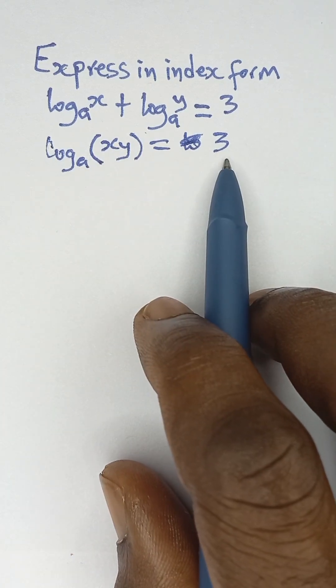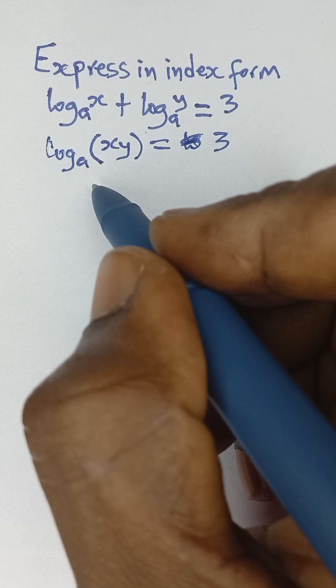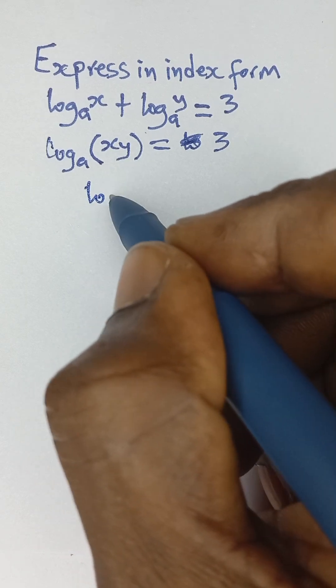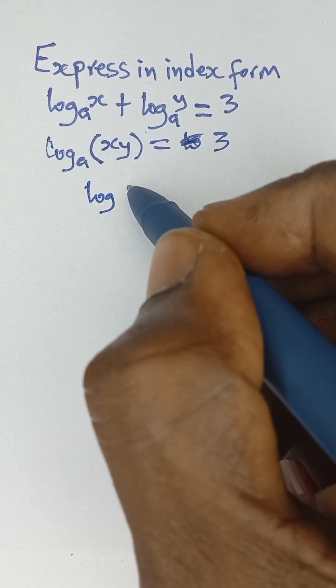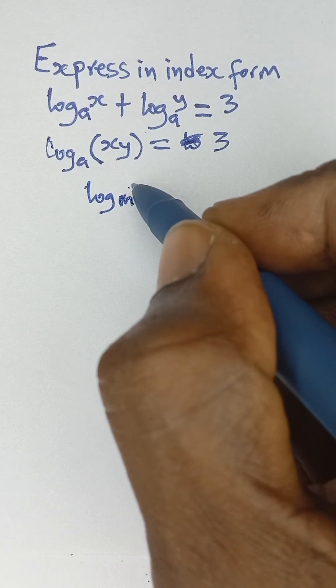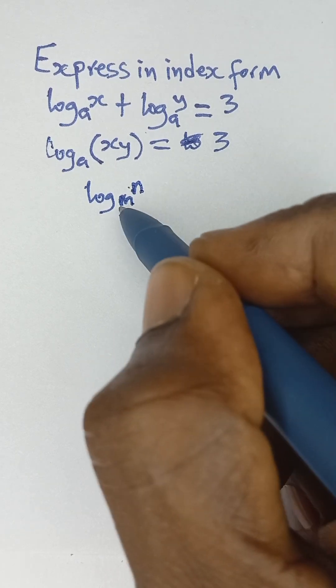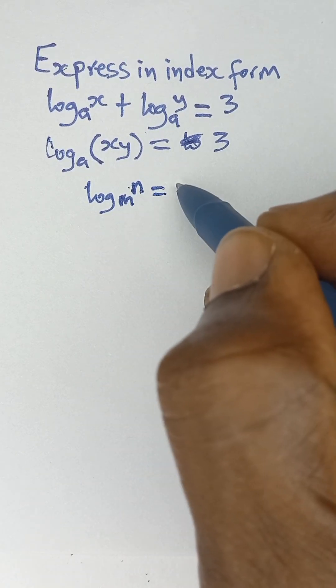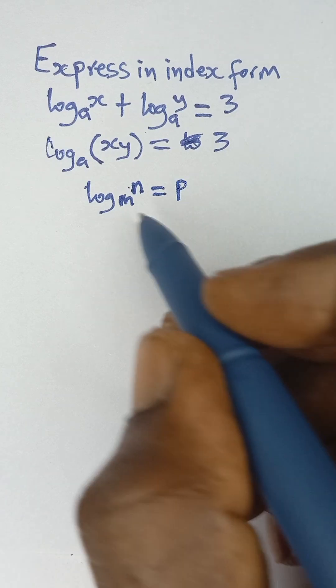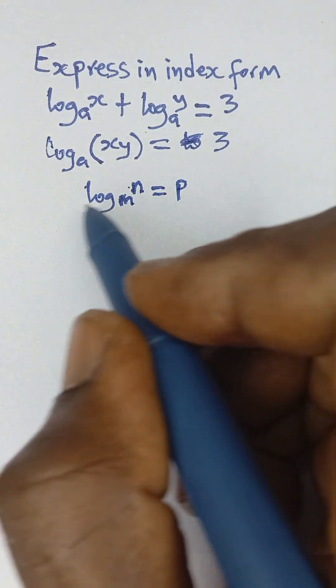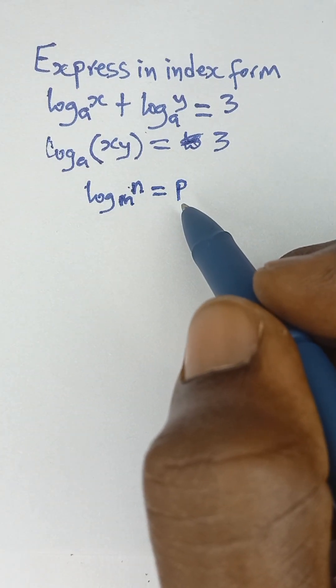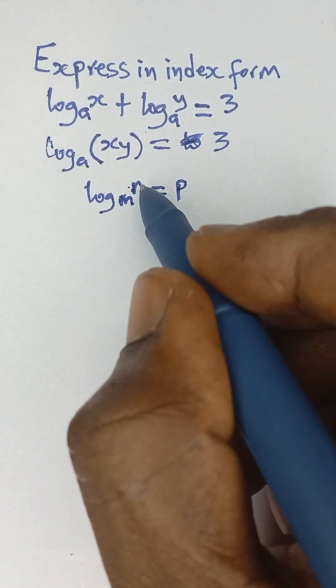Now there's another rule that says if you have log n to the base m is equal to p, if you have a rule like this and you want to express it in index form.